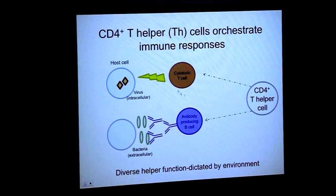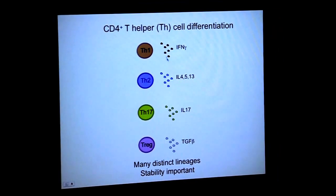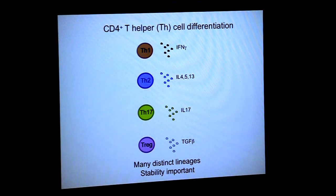Central to this multicellular response, you have T helper cells, which are a population of cells very well known to help other cell types in the immune system. They can help cytotoxic T cells or B cells by producing cytokines. This is dictated by the environment they're surrounded by — the pathogen and where they are. There are many different types of T helper cells: TH1, TH2, TH17, Tregs, and more being described recently. These distinct lineages have key transcriptional properties and cytokines that differ between them, and the stability of these lineages is quite important.